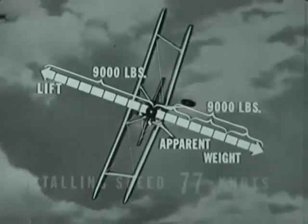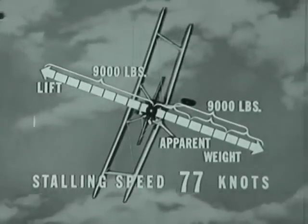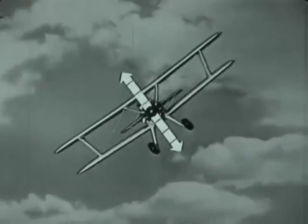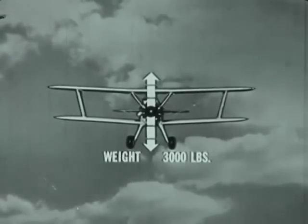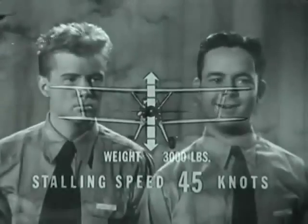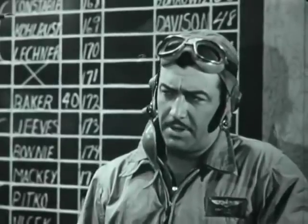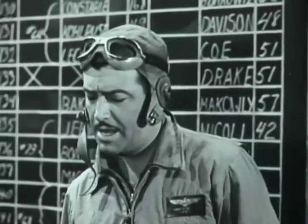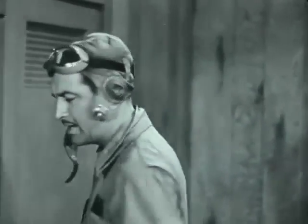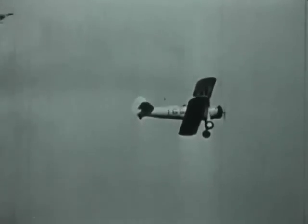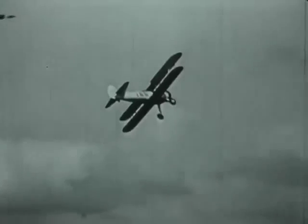77 knots is the stalling speed in a 70-degree bank. As you decrease your bank, apparent weight decreases and stalling speed drops — until in level flight, apparent weight equals actual weight and stalling speed returns to 45 knots. As you steepen your bank in a turn, apparent weight increases and the pilot also seems to get heavier.